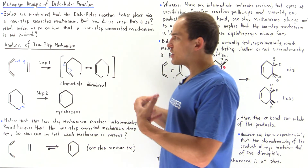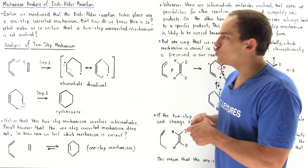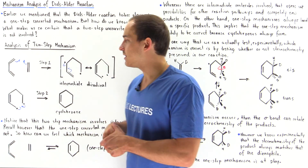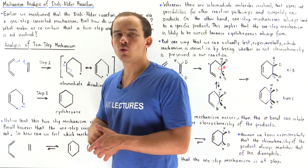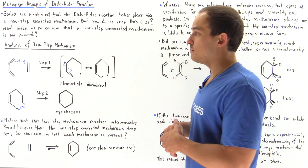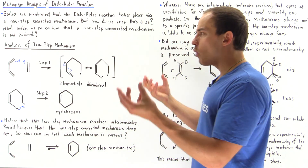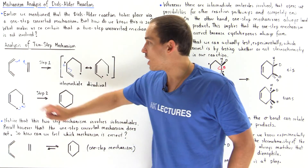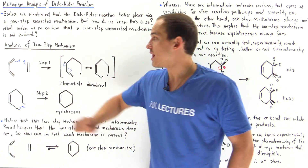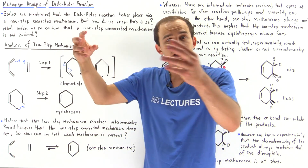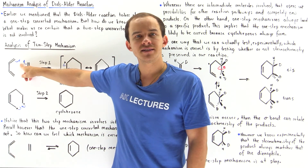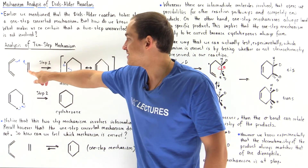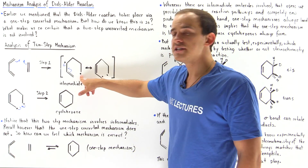Let's begin by analyzing what a potential two-step mechanism might actually look like. Suppose we take our simple alkene, our dienophile, and our 1,3-diene — 1,3-butadiene in this case. One way in which they can react is as follows: one of the electrons in this pi bond and one of the electrons in this pi bond interact to form a single sigma bond, while the second electron in this bond is left on this carbon and the second electron in the other bond is left on the other carbon.